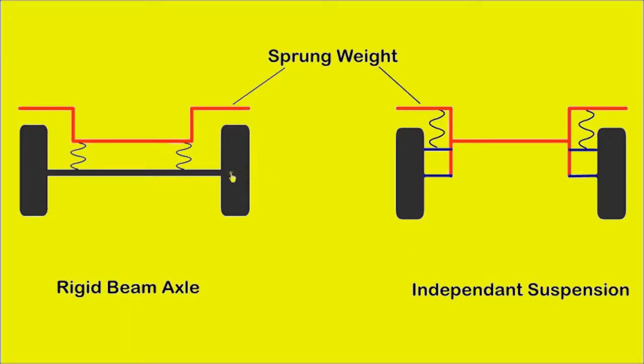Unsprung mass or unsprung weight is the mass of suspension components attached to the wheels. Ideally, the unsprung mass should be as small as possible compared to the sprung vehicle mass.